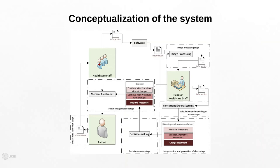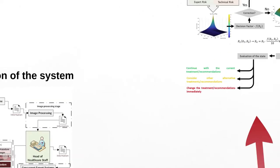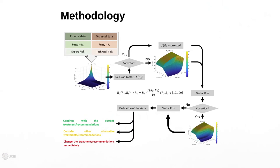Focusing on the concurrent expert system, this is the methodology we presented last year at TIC19. It combines two kinds of information: the input coming from the expert and the technical data. After being processed by the expert systems, we obtain the expert risk and the technical risk. Those are combined through an equation to calculate the global risk associated with the diabetic foot. The system can apply corrections to modulate the standard behavior and adapt it to different situations, ultimately producing recommendation outputs.